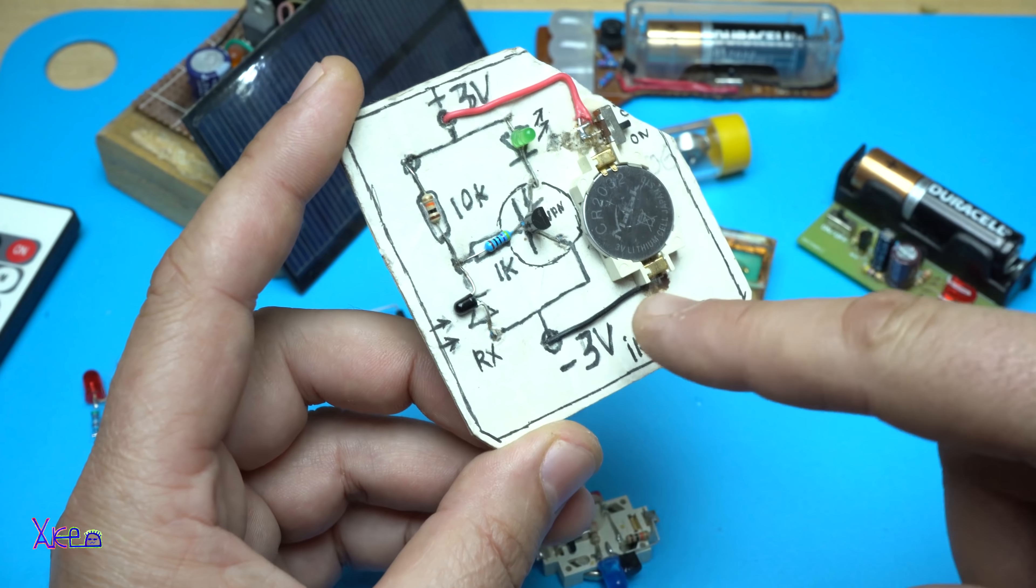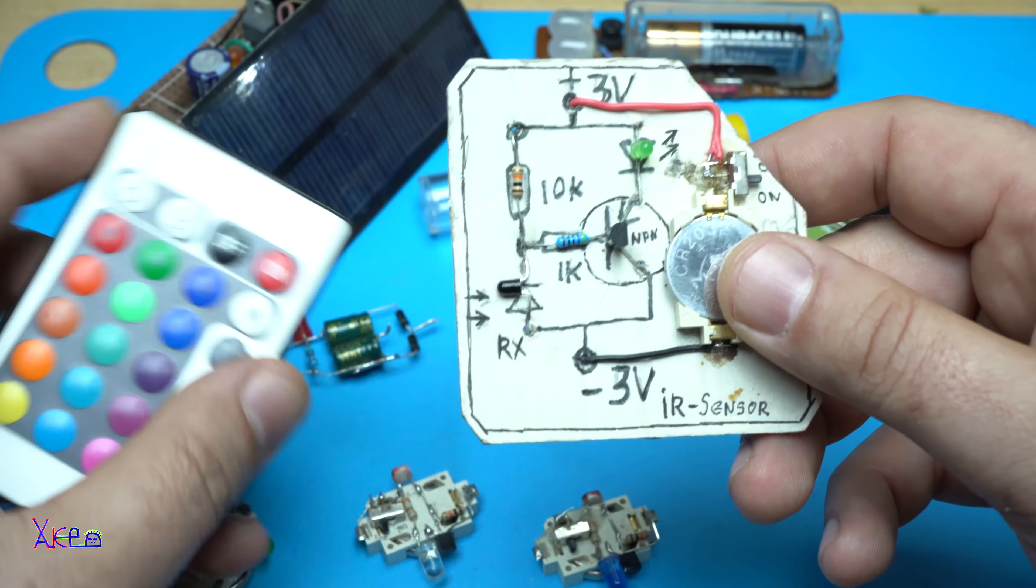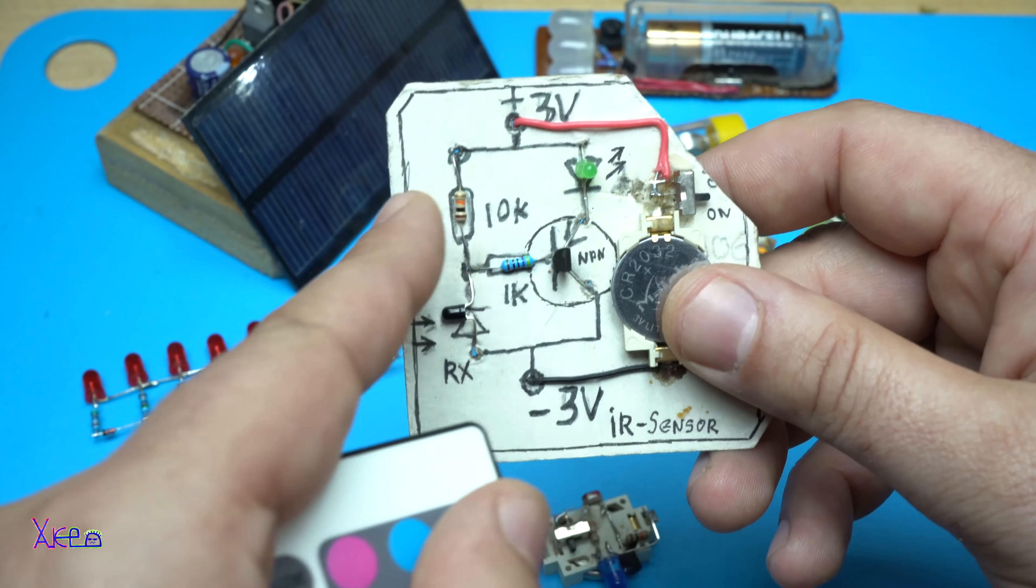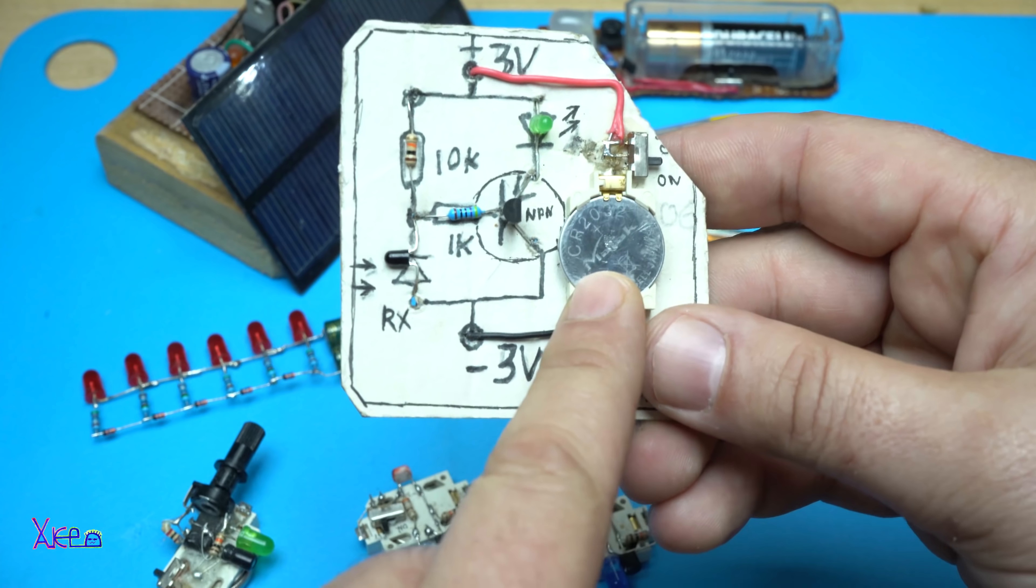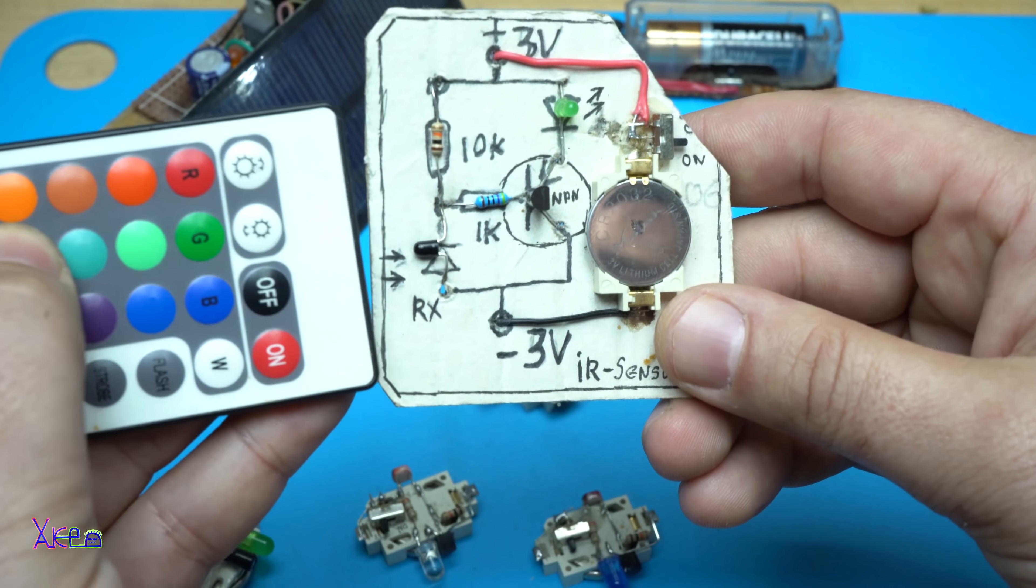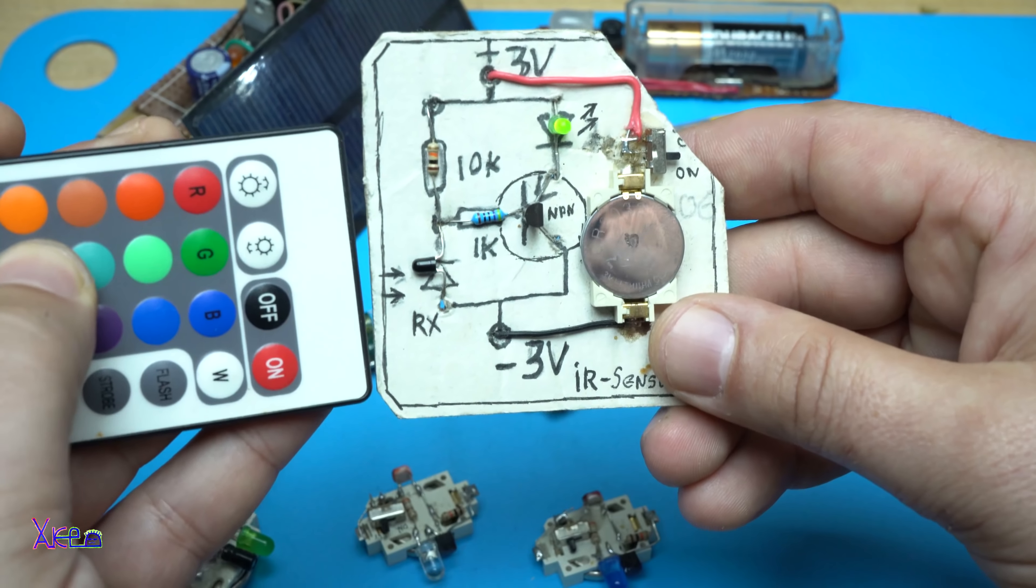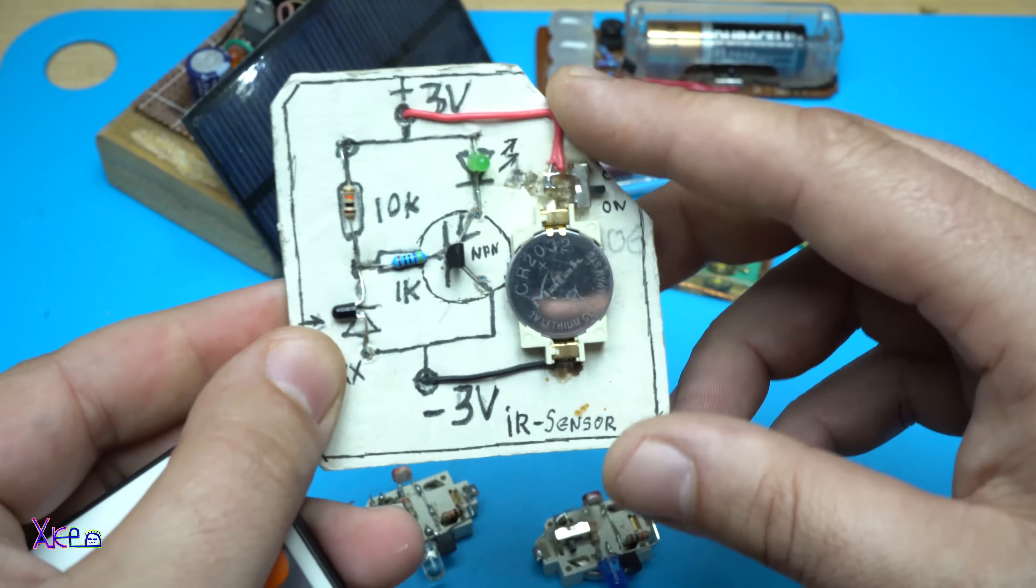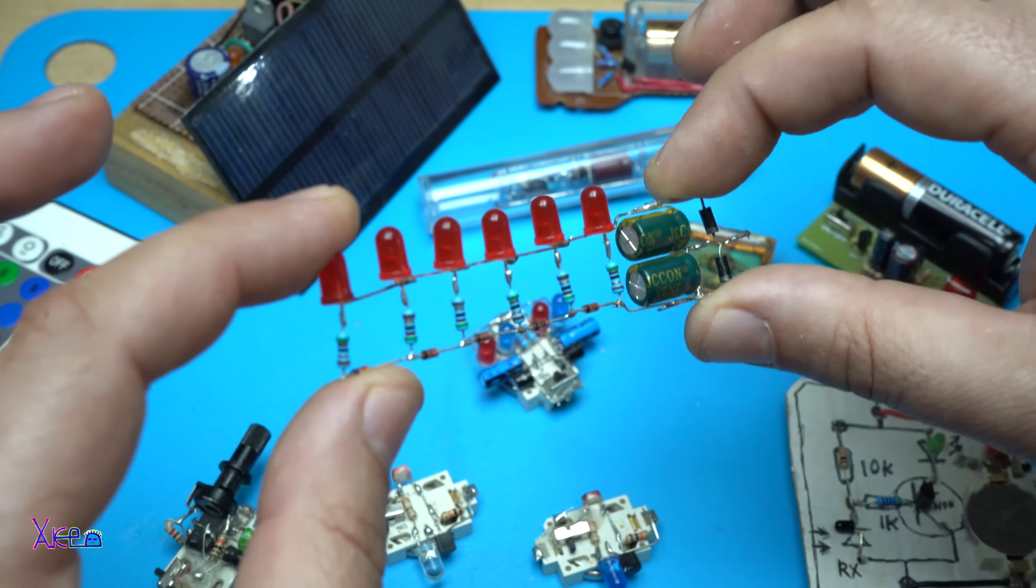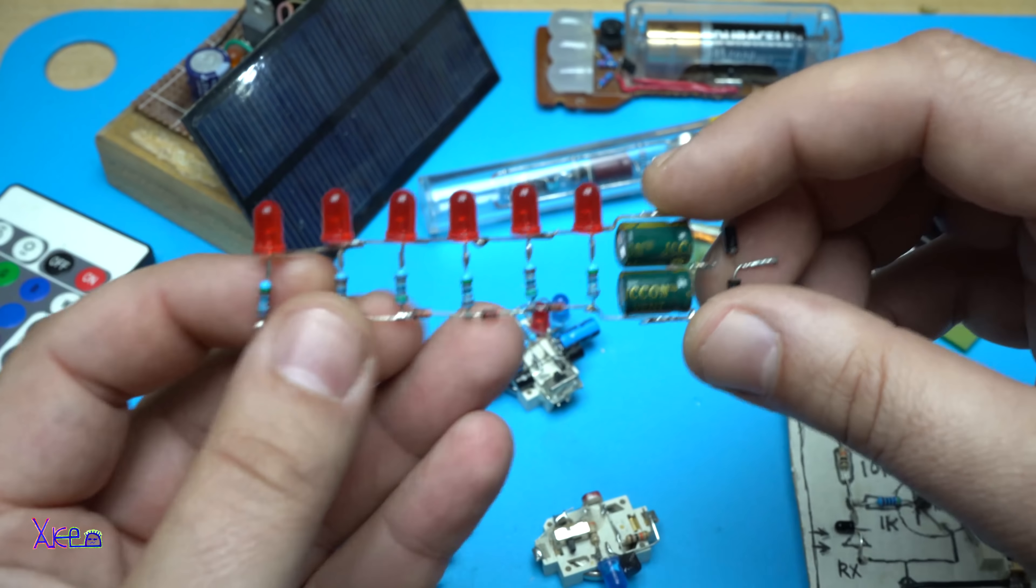Infrared sensor receiver for testing remote controls. You take the remote control, this is the sensor, you can see the circuit diagram. It works with one coin battery 3 volts, and when you press any button on the remote control the LED flashes. Nice gadget.